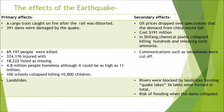374,176 were injured, with 18,222 listed as missing. 4.8 million people were made homeless, although it could be as high as 11 million. 100 schools collapsed, killing 10,000 children, and there were widespread landslides.